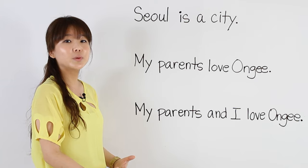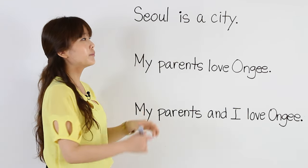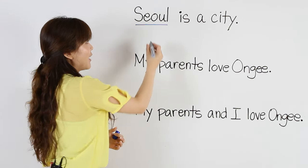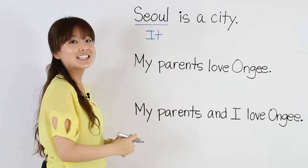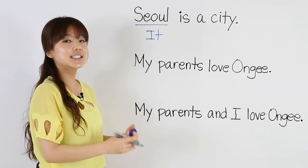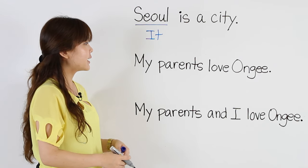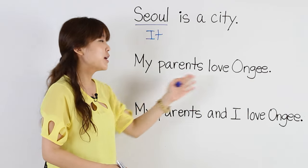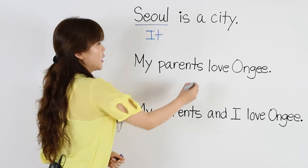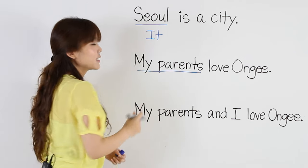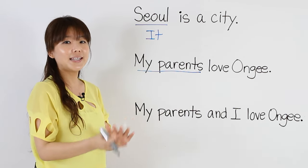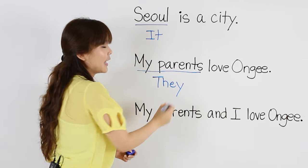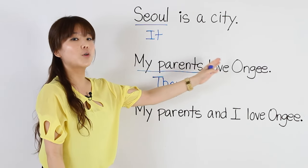The first example says, Seoul is a city. Seoul is a place, so we have to use the subjective pronoun It. It is a city. The next example says, My parents love Ongi. My parents are two people — my mom and my dad — so I have to say They. They love Ongi.